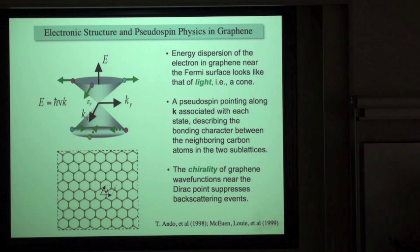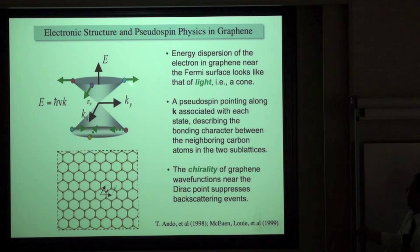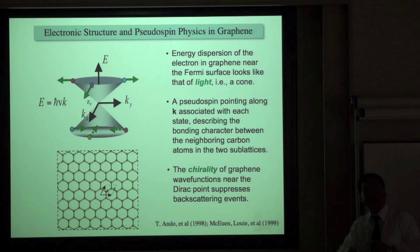For a slowly varying potential, you cannot mix a bonding state with an anti-bonding state. Therefore, backscattering is suppressed in graphene. This is the reason why graphene is such a good conductor — it's due to the chiral nature of the wave function.